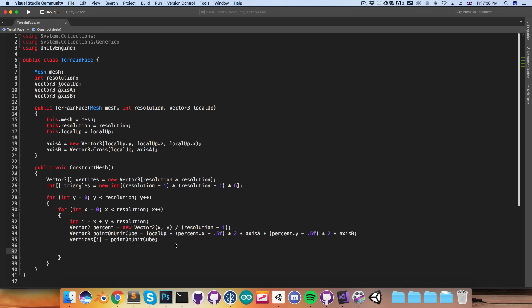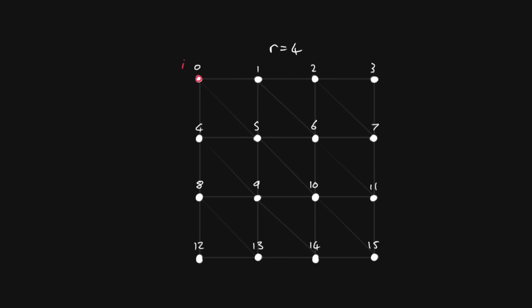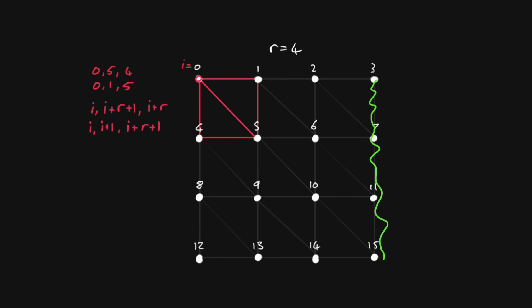Let's now create our triangles. If we're at vertex 0, so our index i is 0, we're going to want to create two triangles. We want to define them in clockwise order so that the mesh faces the correct way. The first triangle could be 0, 5, 4 and the second 0, 1, 5. More generally, if we're starting at vertex i, then the next vertex in the first triangle would be i plus resolution plus 1, and then i plus resolution. For the second triangle it would be i, followed by i plus 1, followed by i plus resolution plus 1. We'll be adding these two triangles for each vertex except for those along the right and bottom edge, since for those the two triangles would be outside the mesh.